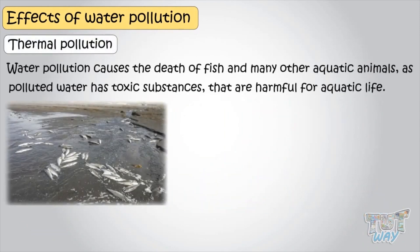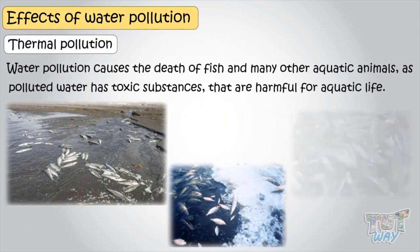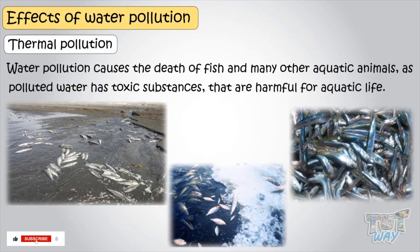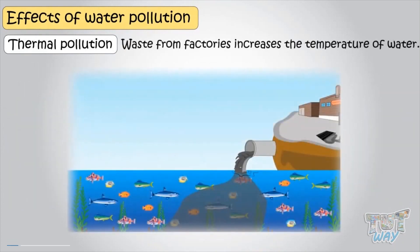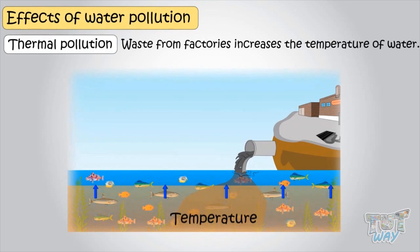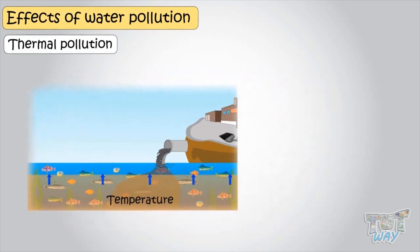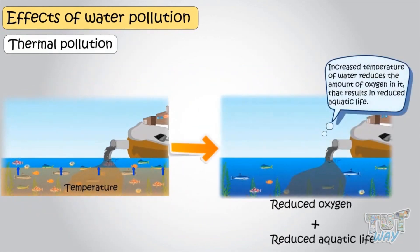Water pollution causes the death of fish and many other aquatic animals, as polluted water has toxic substances that are harmful for aquatic life. Moreover, the waste that comes from factories also increases the temperature of water in water bodies, which is called thermal pollution. An increased temperature reduces the amount of oxygen in water, because of which the amount of aquatic life in a water body reduces.